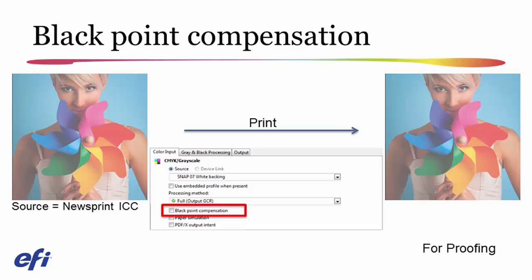Only if I were proofing would I want to disable black point compensation. This will give me the same washed out appearance on the output that I had on the input. And again, for proofing, this might be useful.